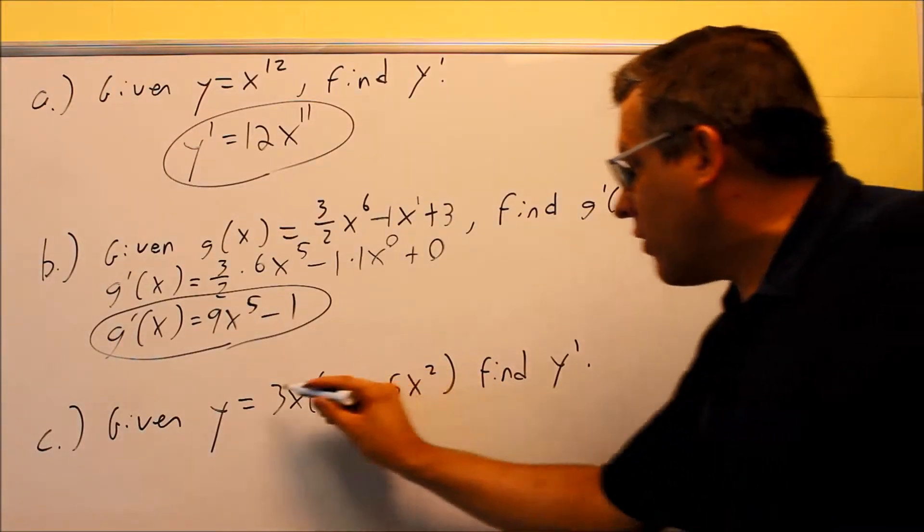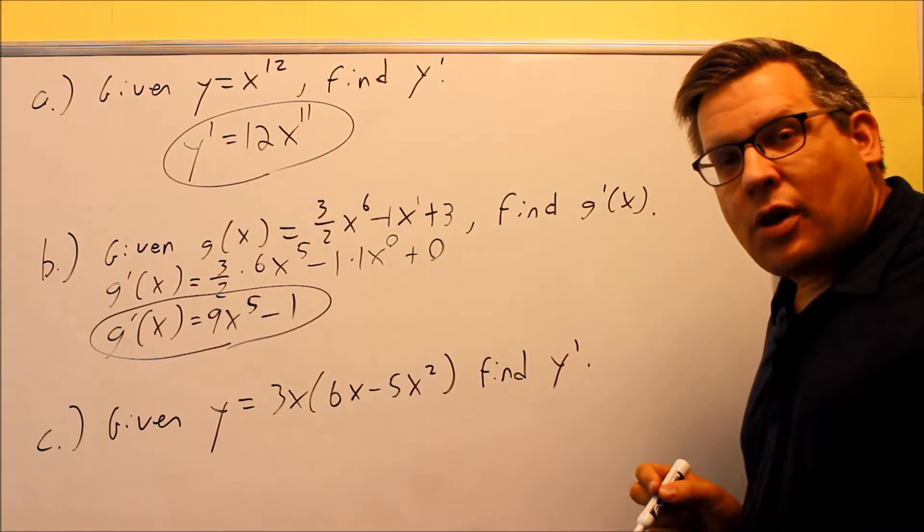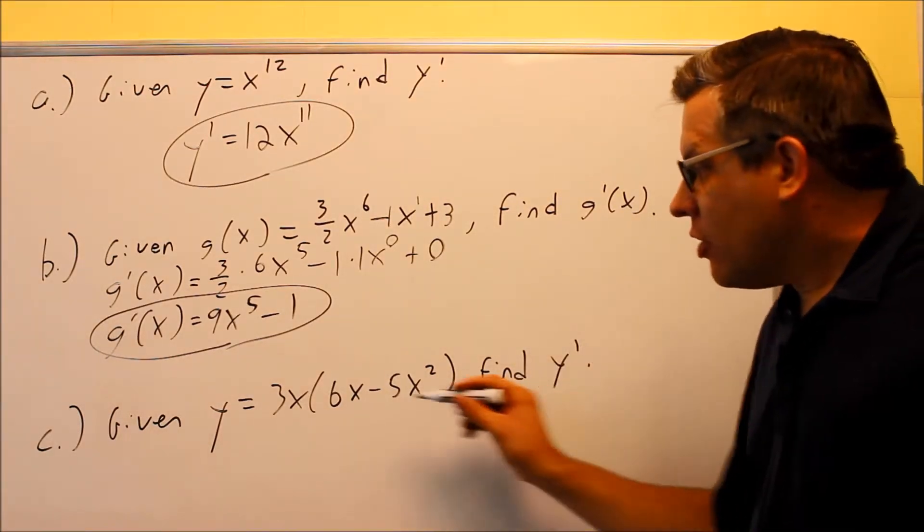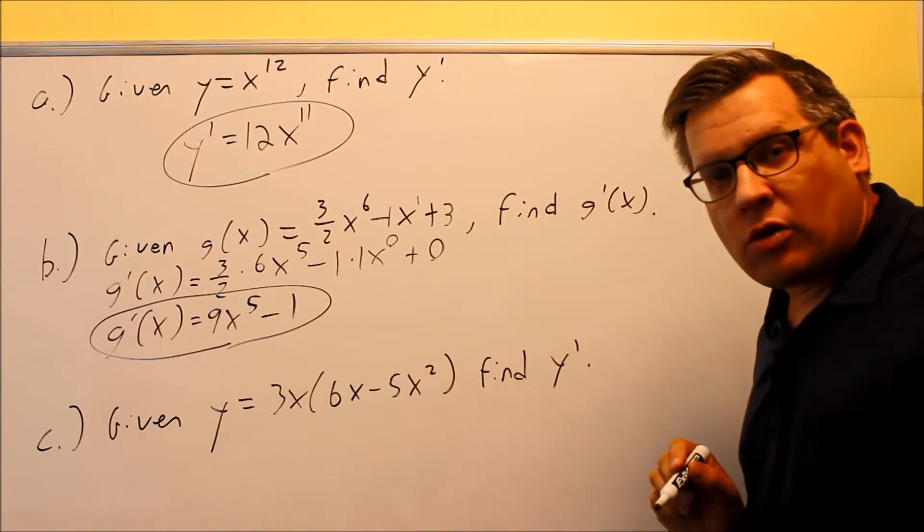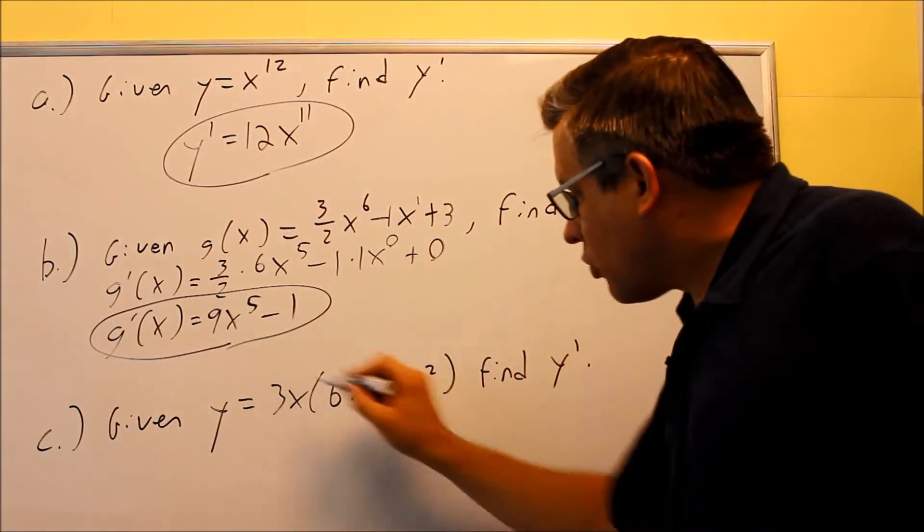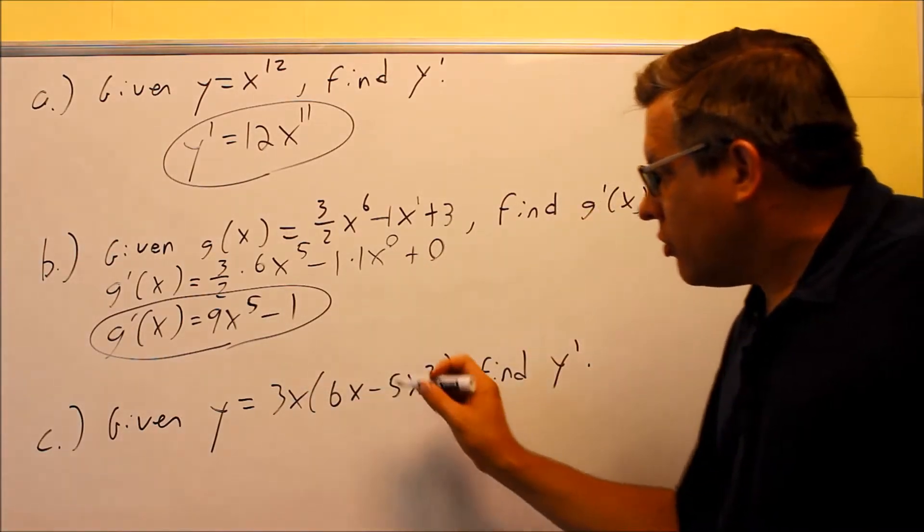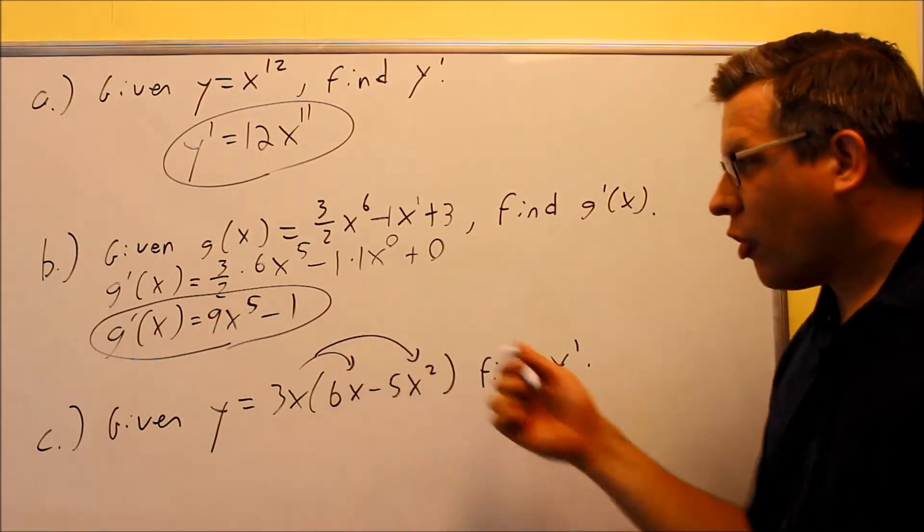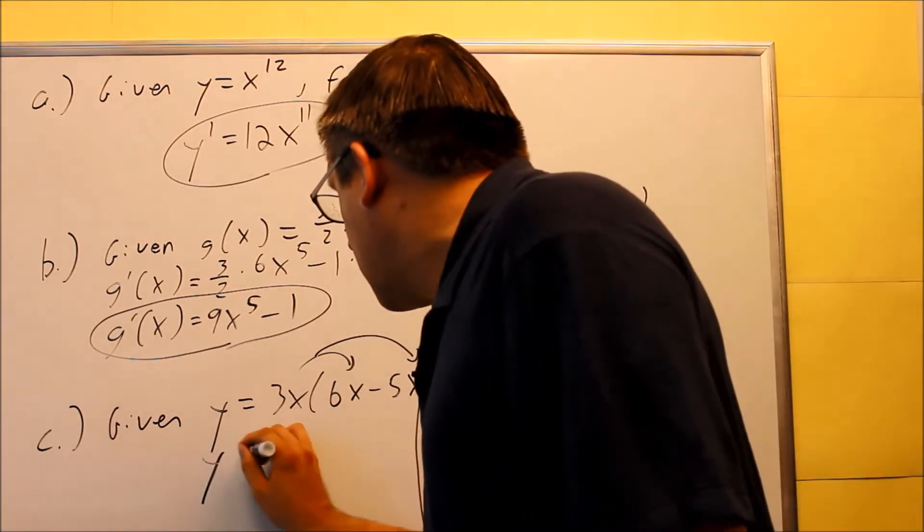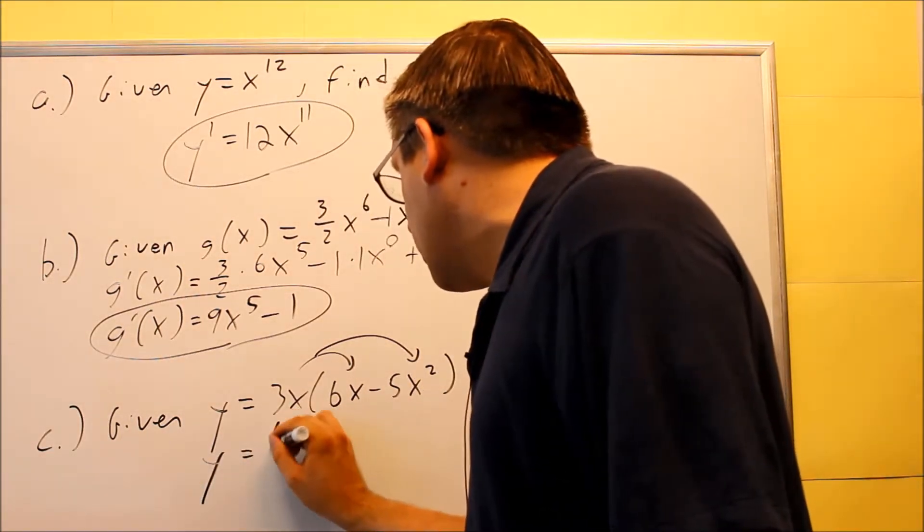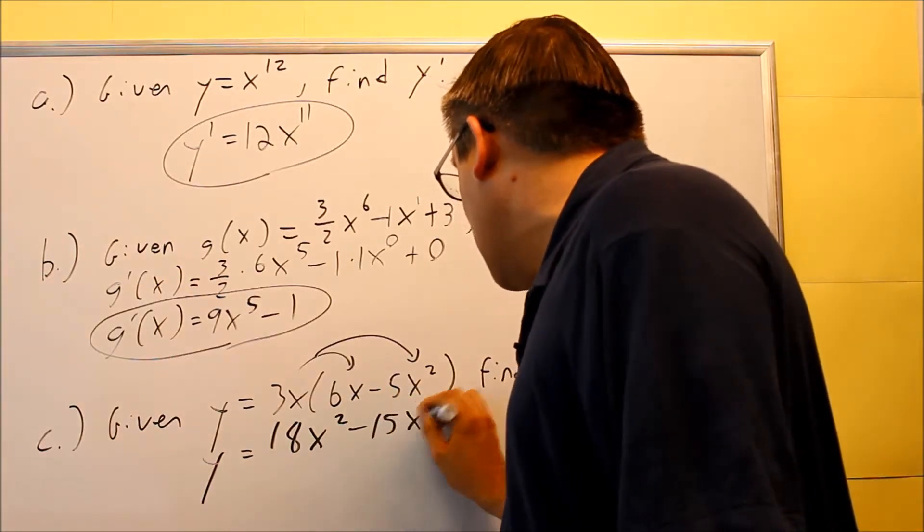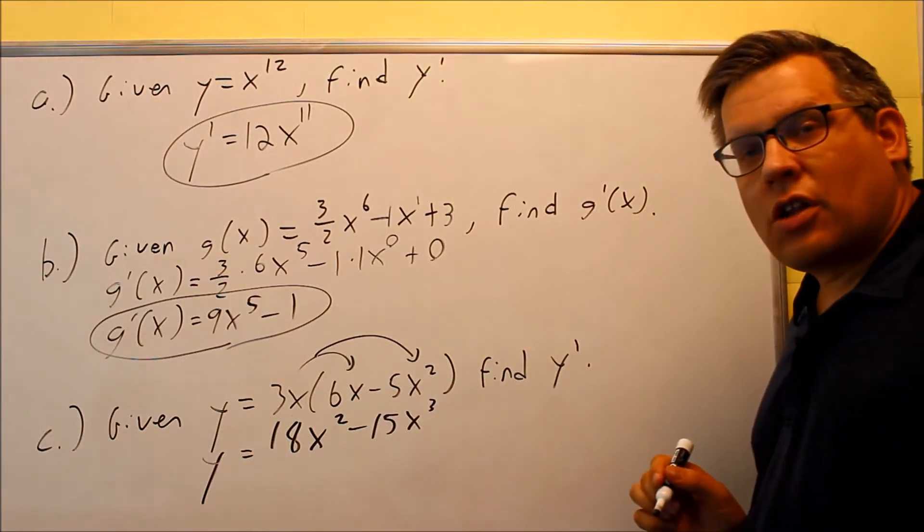Then the last one. The last one, we have two things that are being multiplied together here. We are going to talk about this in a later video, how you do that. There's a rule that's called the product rule, but in this case, we're not going to use the product rule. We're going to do another technique where you're going to multiply each of these out. So in this case, we're just going to FOIL that first. So that's the first step we'll do. We'll do 18x squared minus 15x cubed, so we get to that step.